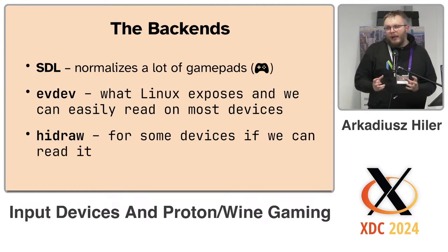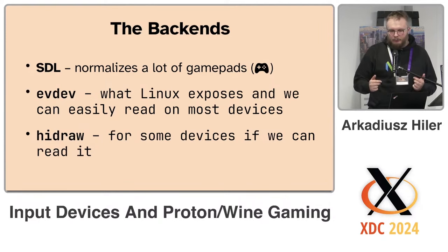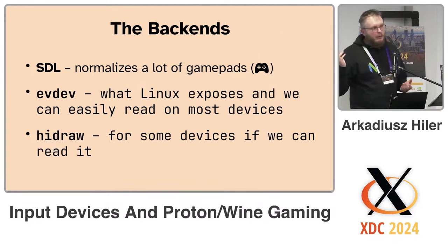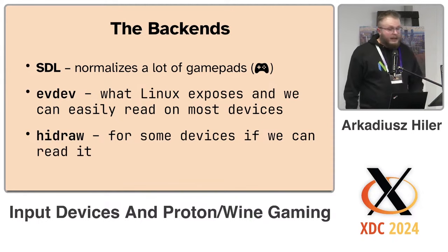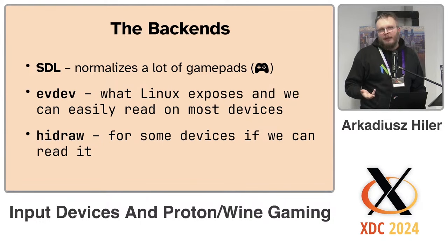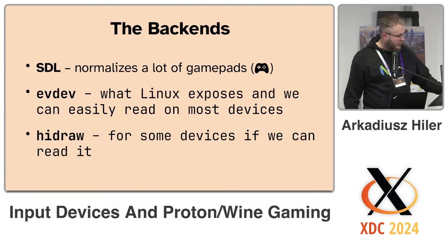Think about the usual Xbox controller — A, B, X, Y buttons, bumpers, triggers, D-pad, and analogs. We get all of them in the same form and pretend all of them are Xbox controllers. Then we have the usual Linux evdev, which is readable on most machines but is already heavily processed by the kernel. We use that whenever SDL is not good enough, or for more complex devices beyond game controllers, like flight sticks.